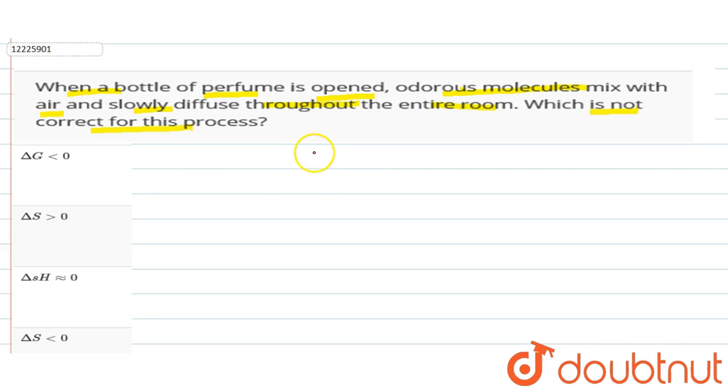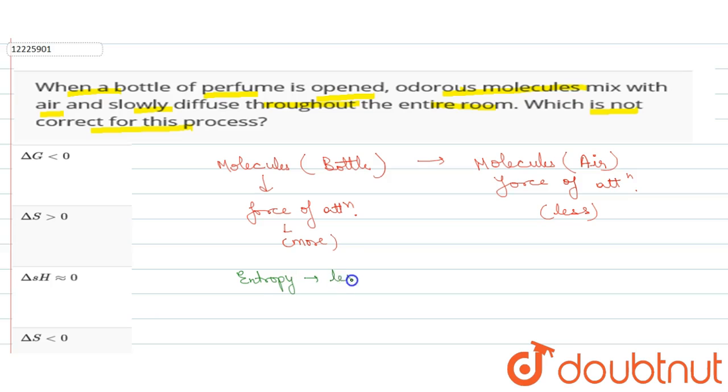First, when the molecules were in the bottle, the degree of randomness was less. Now when molecules are in the air, the degree of randomness is more. In this case, entropy increases and delta S is greater than 0.